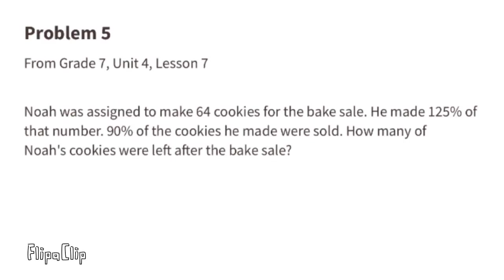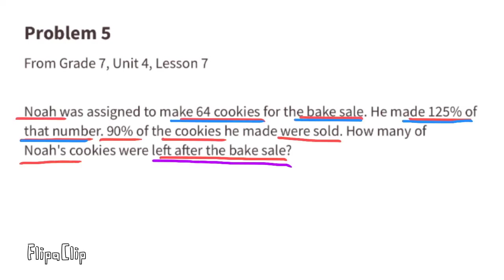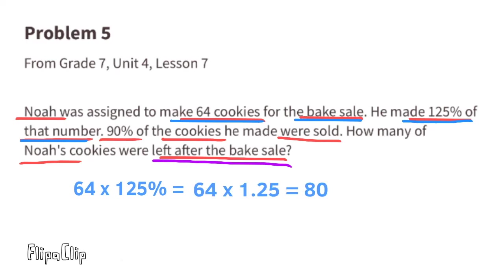Problem 5 from 7th grade Unit 4, Lesson 7: Noah was assigned to make 64 cookies for the bake sale. He made 125% of that number, and 90% of the cookies he made were sold. How many of Noah's cookies were left after the bake sale? He made 125% of 64, so we write 64 times 1.25, which equals 80. So Noah baked 80 cookies.